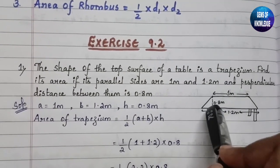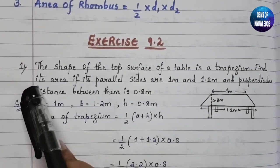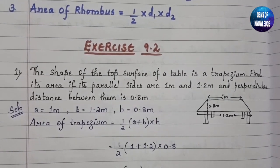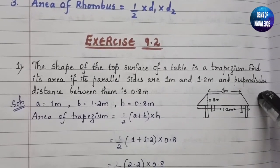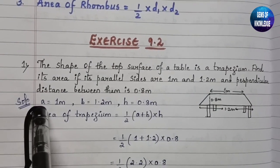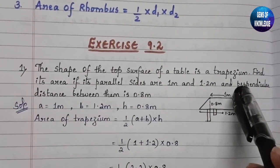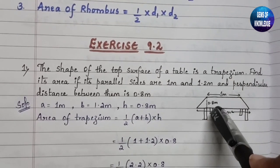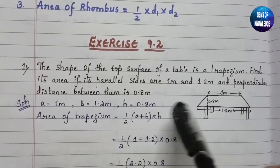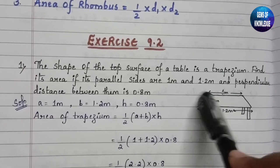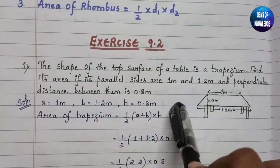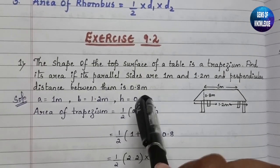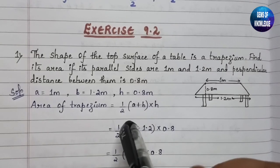We need to find the area of this trapezium. Using the formula: area = half into (a + b) into height. Here, a = 1 meter, b = 1.2 meters, and height = 0.8 meter. Substituting: area = half into (1 + 1.2) into 0.8.